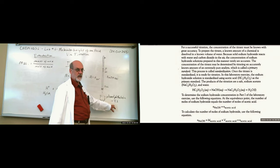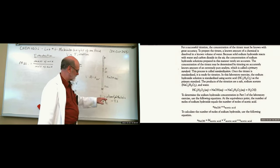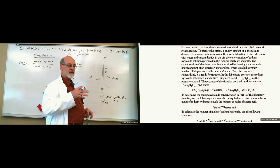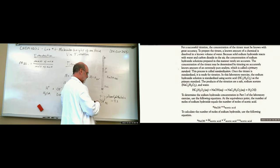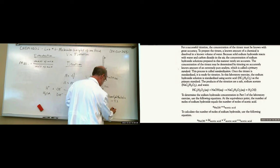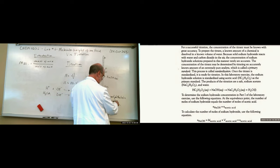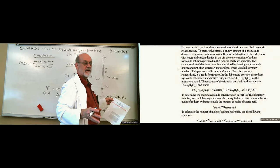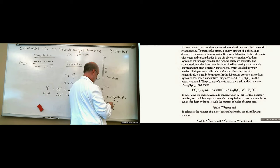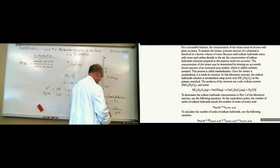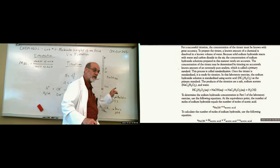This indicator gives us the endpoint — that color change is the point at which we hope the equivalence point is. When the solution is acidic it's clear, no color. Once we've equalized it and we're putting extra hydroxyls in, they've got no place to go, making the solution basic. Once it goes basic, it turns pink.